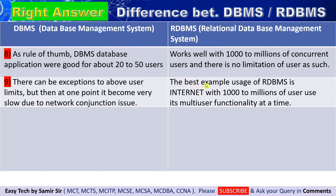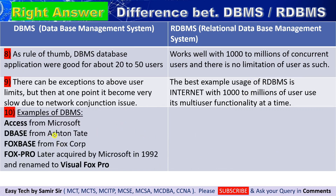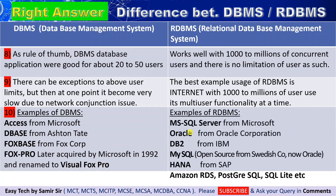The best example of RDBMS in action is the internet — hundreds of thousands to millions of concurrent users with multi-user functionality using RDBMS servers all at the same time. Some examples of DBMS are Microsoft Access, dBASE developed by Ashton-Tate, FoxBase developed by Fox Corporation, and FoxPro, which was acquired by Microsoft in 1992 and renamed Visual FoxPro. Examples of RDBMS include MS SQL Server from Microsoft, Oracle from Oracle Corporation, DB2 from IBM, MySQL developed as open-source by a Swedish company and now owned by Oracle, HANA from SAP, Amazon RDS, PostgreSQL, and SQLite.